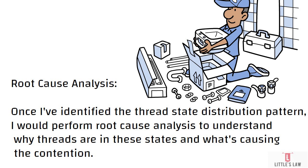By correlating the thread state distribution identified in the root cause analysis with other metrics, you can gain further insights into the underlying issues. You can get CPU utilization or database activity metrics through application performance monitoring tools, and you must correlate those values to understand what is happening. Now, moving on to the last part — the solution.